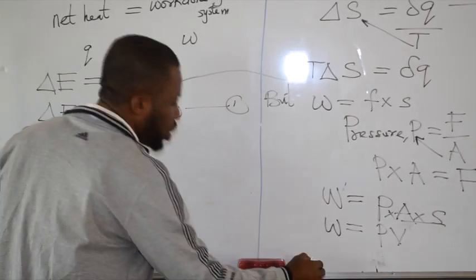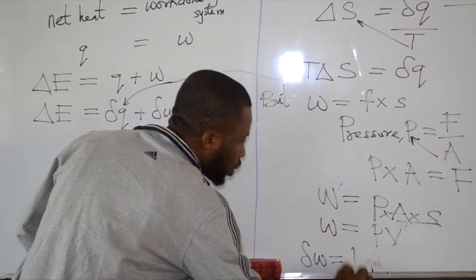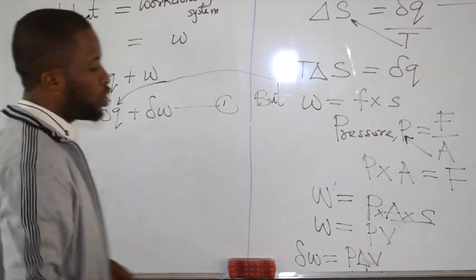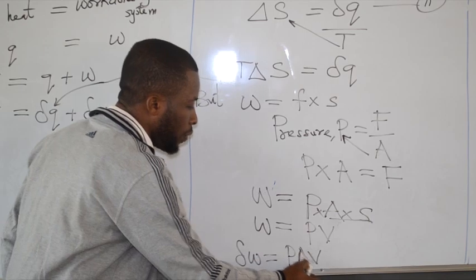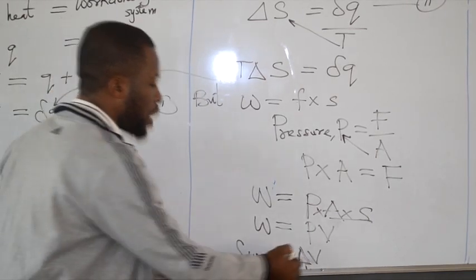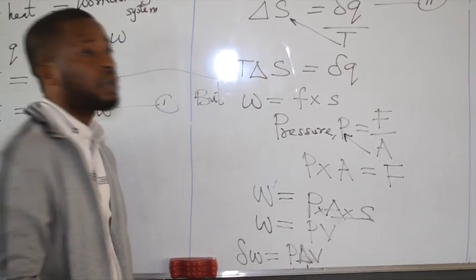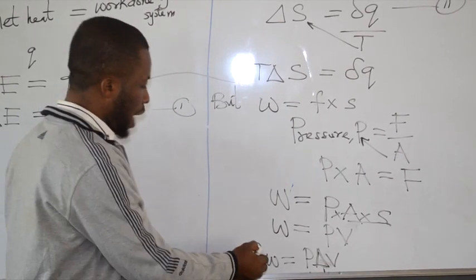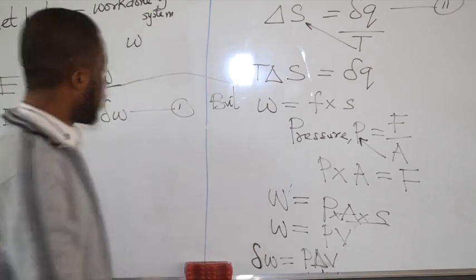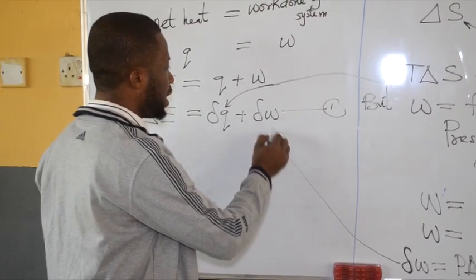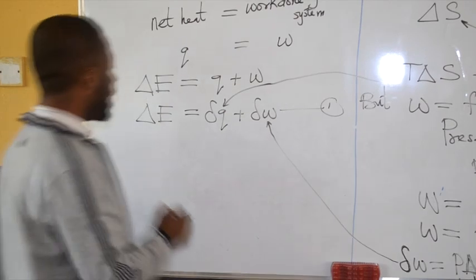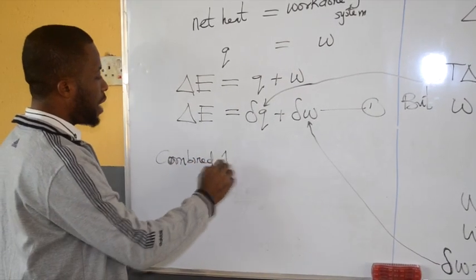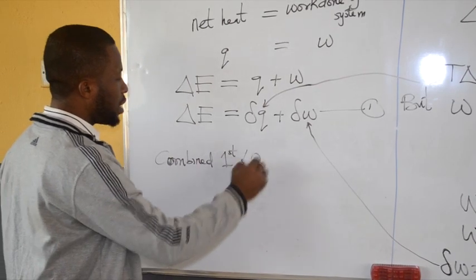Meaning that a change in work done is equal to pressure times change in volume. Of course, I use the symbol delta for volume because volume is an exact function, as opposed to work done and heat, which we use this sign for. So I will now have a combined first and second law.